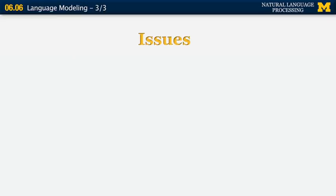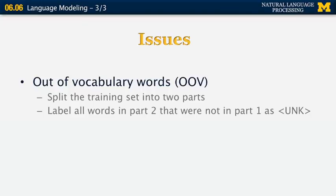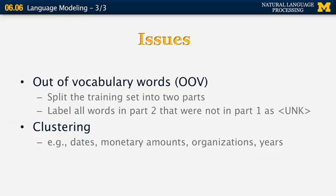Two issues arise when dealing with language models. The first is how to handle out-of-vocabulary (OOV) words — words that appear in the test data but were never seen in the training data. To estimate their probabilities, we can split the training data into two parts and label all words in part two that weren't in part one as unknown words, then use those estimates for test data. Another approach is clustering — combining all date expressions together, all monetary amounts together, all organizations, and so on, to compute conditional probabilities like 'what is the probability of word wi appearing after a year expression?'